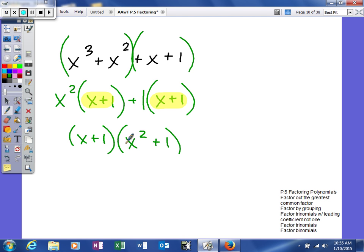As you can see, this is a binomial times a binomial. I can check: this times this is this, this times this is this, this times this is this, and this times this will give me this. So it works out just fine.